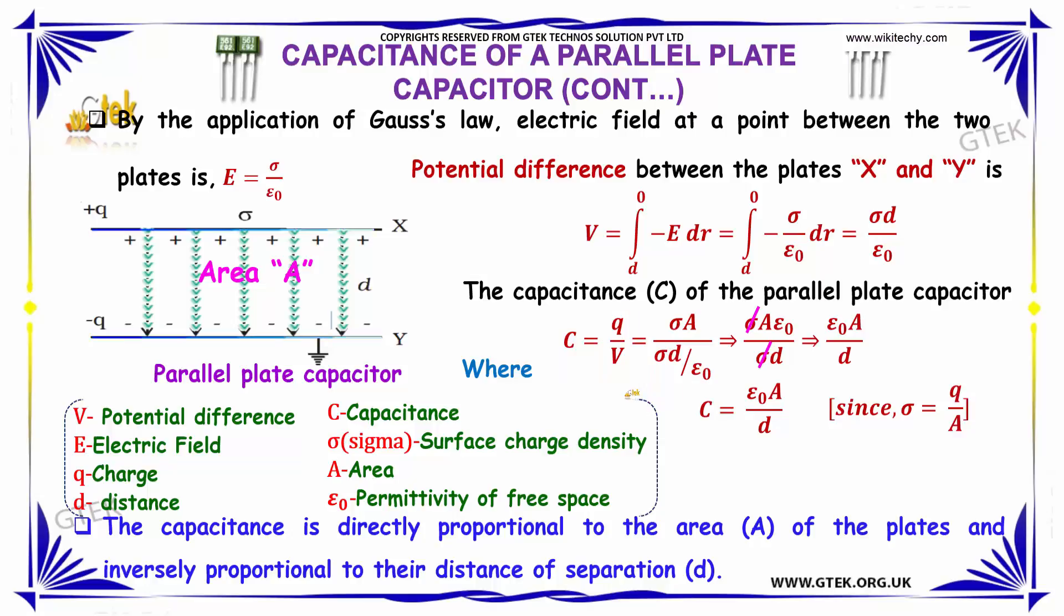On canceling σ in the numerator and denominator, we get C = ε₀A/d.